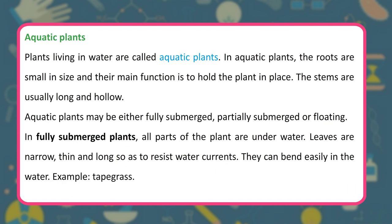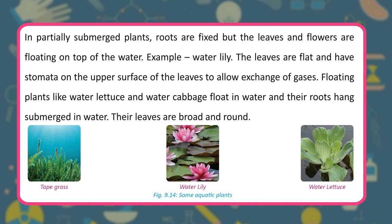Plants living in water are called aquatic plants. Their roots are small and mainly hold the plant in place, while stems are usually long and hollow. Aquatic plants may be fully submerged, partially submerged, or floating. In fully submerged plants, all parts are underwater with narrow, thin, long leaves that resist water currents. In partially submerged plants, roots are fixed but leaves and flowers float on top of the water, with broad and round leaves.